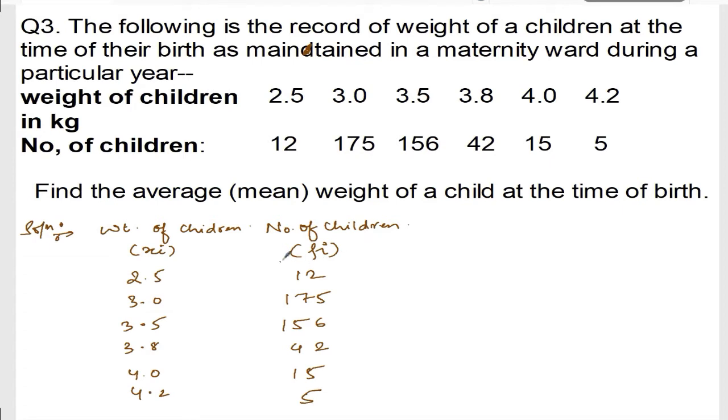Okay. Now, this is FI. This is XI. Now, I now find out FI XI. Okay. Now, you find out FI XI. So, FI XI, 12 into 2.5. 12, 2, 0, 24. 12, 0, 5, 6. That will be 30. So, this will be 30.